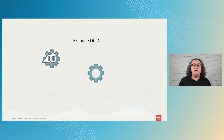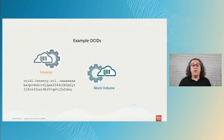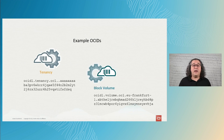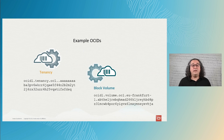Here you can see some examples of OCIDs — one for a tenancy, so after OC1 you can see the two consecutive dots making the region field empty, as the tenancy is a global resource. The other example is for a volume, as stated in the type, and it is located in the Frankfurt region.